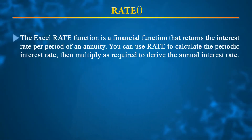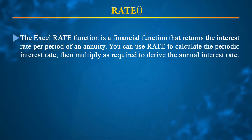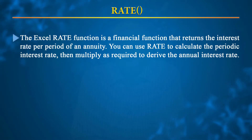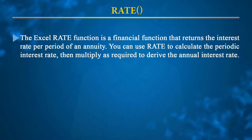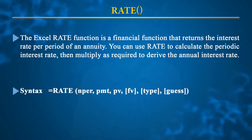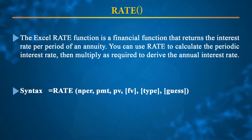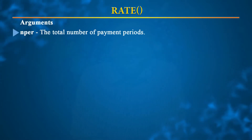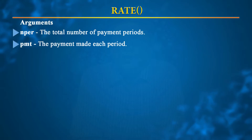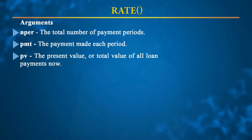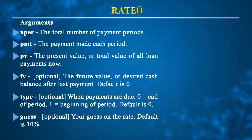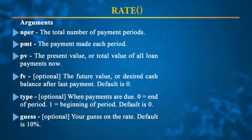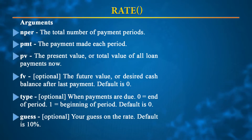The RATE function returns the interest rate per period for an annuity. You can use RATE to calculate the periodic interest rate and then multiply as required to derive the annual interest rate. The formula requires arguments: NPER (total number of payment periods), PMT (payment made each period), PV (present value or total value of all loan payments), and optional arguments FV, guess, and type — if not entered, they do not affect the calculation.